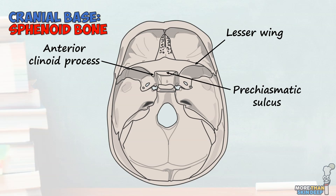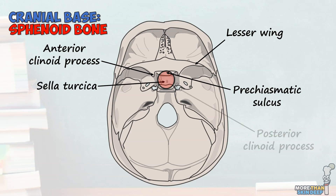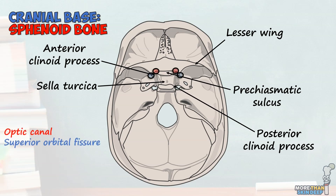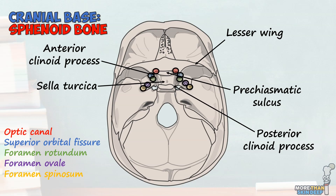The parts of the sphenoid bone in the middle cranial fossa are the sella turcica, which is where the pituitary gland sits, and the posterior clinoid processes. The sphenoid bone has a number of openings in it: the optic canal, superior orbital fissure, foramen rotundum, foramen ovale, and foramen spinosum. Like the frontal and ethmoid bones, the sphenoid has a nasal sinus sitting in its interior known as the sphenoid sinus.